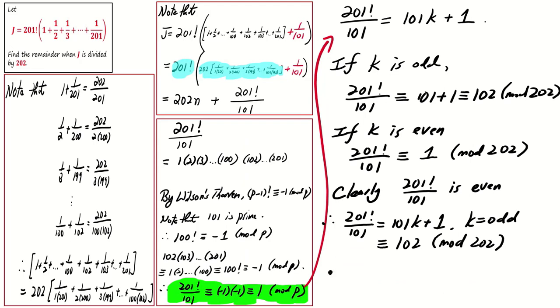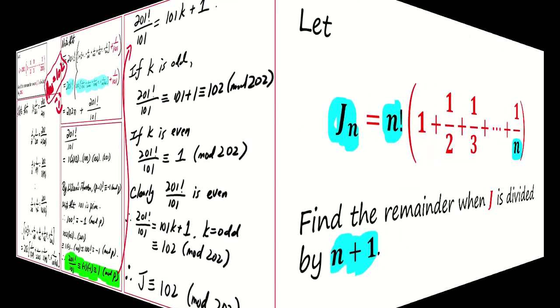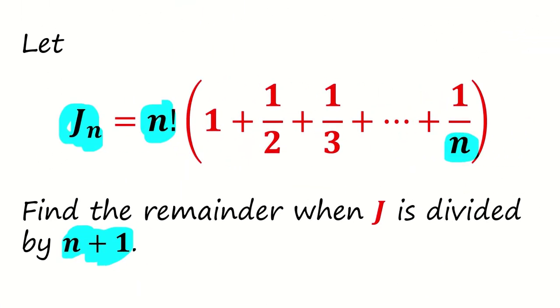This leads us to the answer for the problem. J is congruent to 102 mod 202. So, the answer is 102. As we wrap up today's problem, I encourage you to take on the challenge of the general case. It is a great way to expand your problem-solving skill, and I'm sure you will find it rewarding. Share your answer in the comments below.